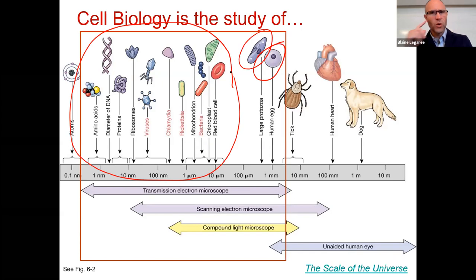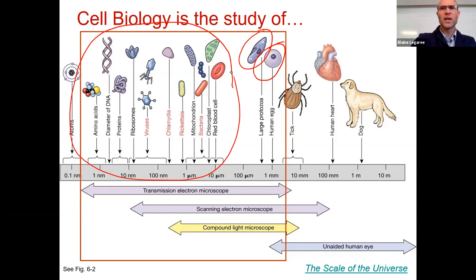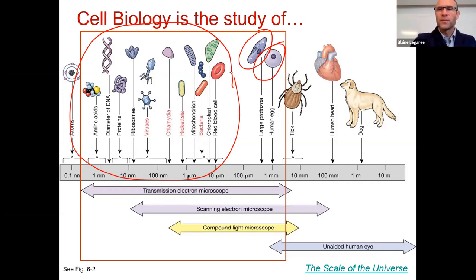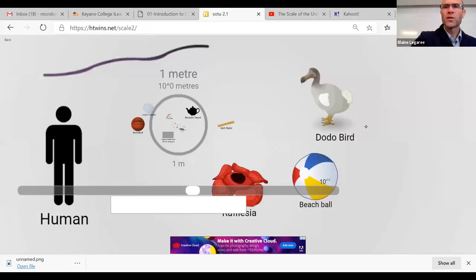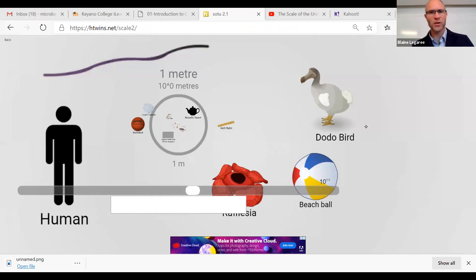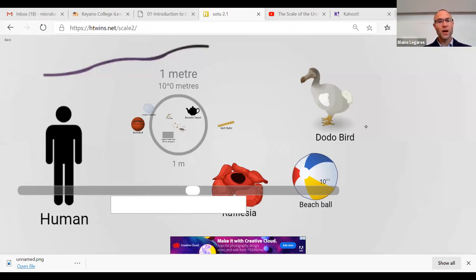I want to show you this tool — it's called the Scale of the Universe. This is super cool — you can check out this website or download an app for a couple of bucks. You can zoom in and out on the universe. There's a human, and if you click on him he gives you a little bit of information. There's a Japanese spider crab — they are massive. You can zoom out and see man-made features, comparisons of a human to an elephant, T. rex, blue whale — Eiffel Tower, Statue of Liberty, the Great Pyramids.